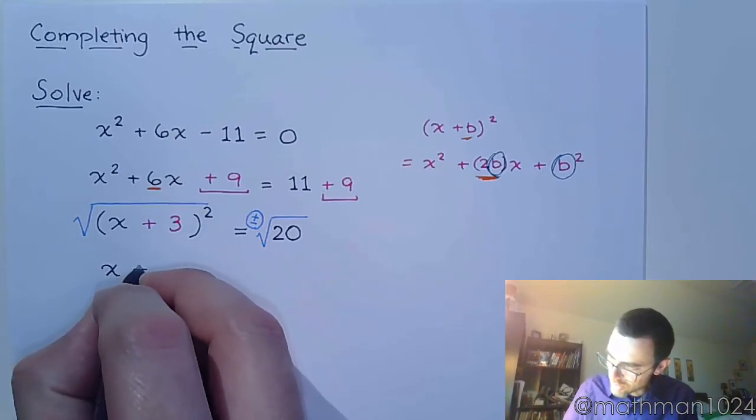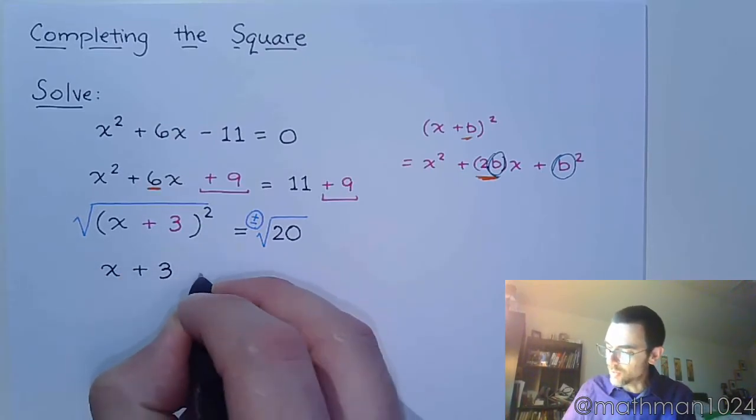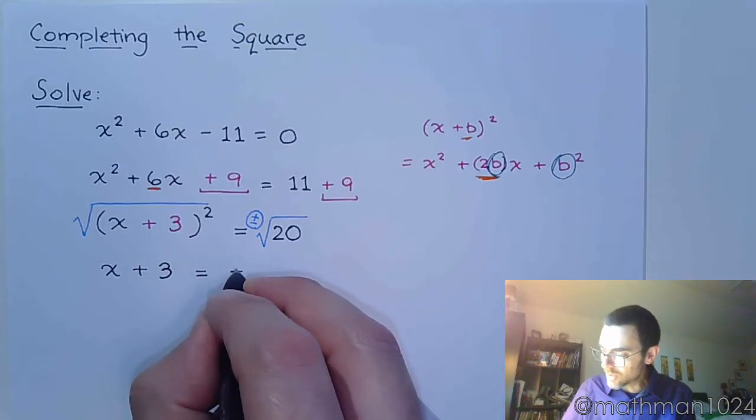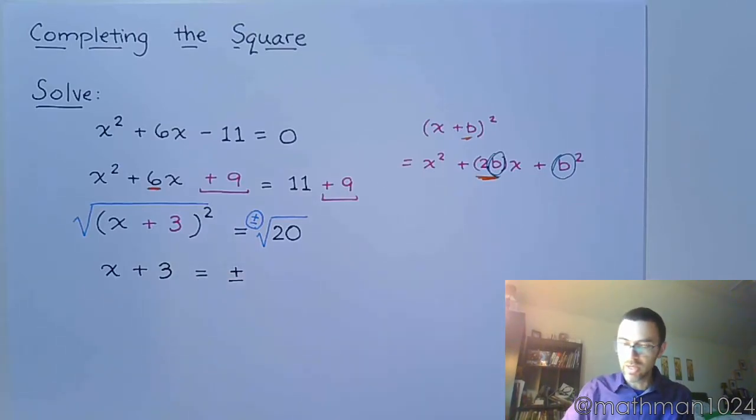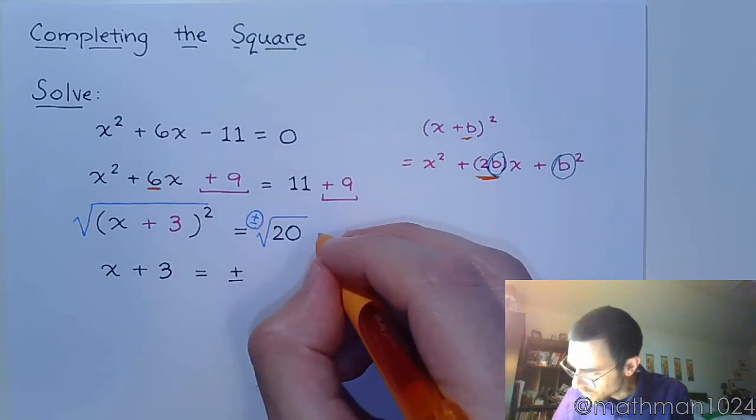All right so let's see what happens here. On the left side we have x + 3, on the right side we have ± and this is where you take your square root and you break this guy down.